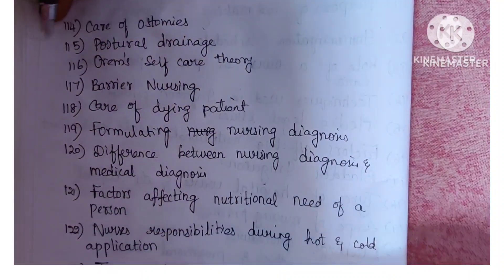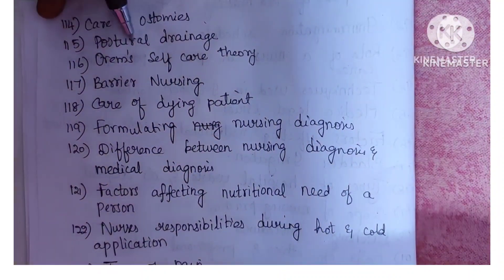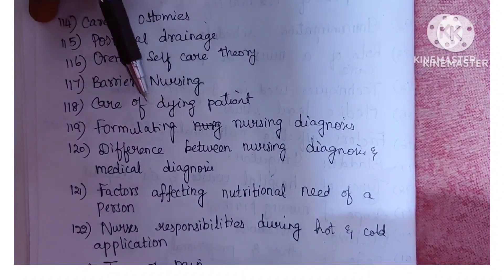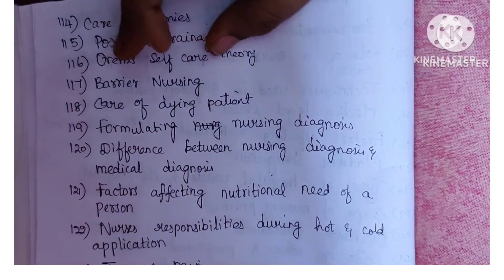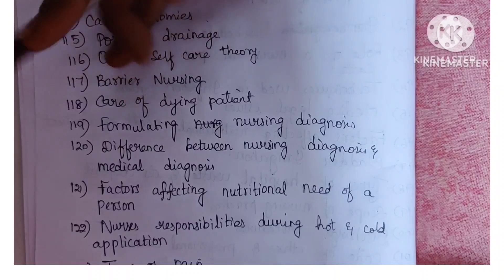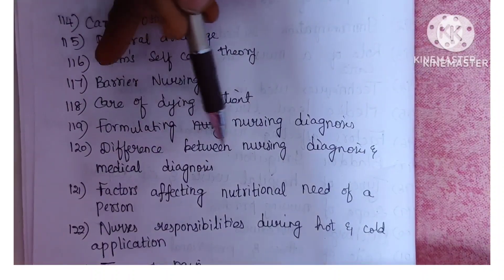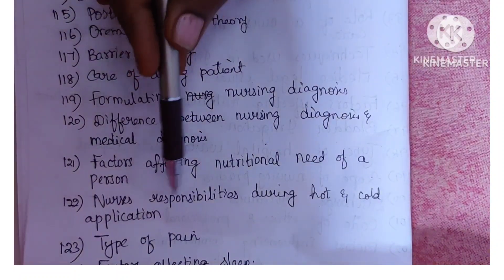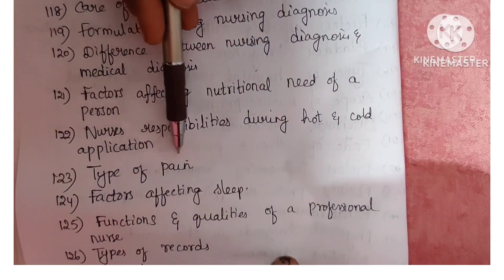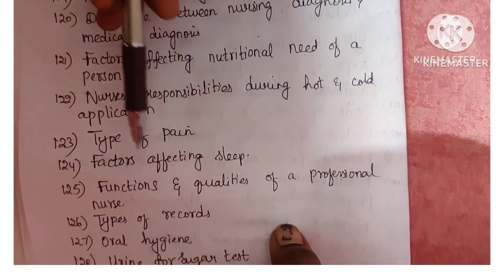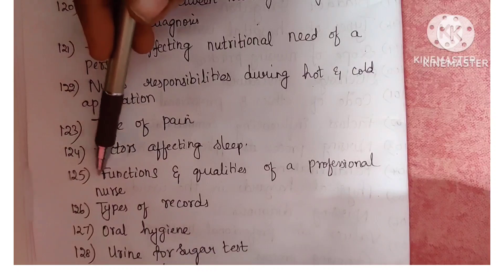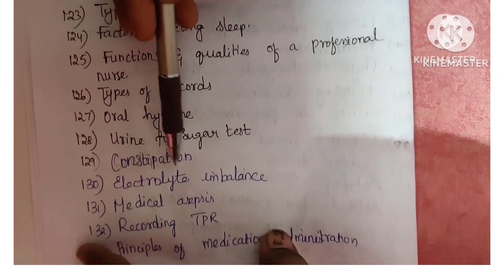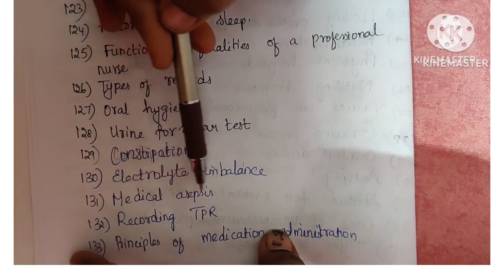Next is care of ostomies. Next is postural drainage. Next is Orem self-care theory. Next is barrier nursing. Next is care of dying patient. Next is formulating nursing diagnosis. Next is the difference between nursing diagnosis and medical diagnosis. Next is factors affecting nutritional needs of a person. Next is nurse responsibilities during hot and cold application. Next is factors affecting sleep. Next is functions and qualities of a professional nurse. Next is types of records. Next is oral hygiene. Next is urine for sugar test. Next is constipation. Next is electrolyte imbalance. Next is medical asepsis.